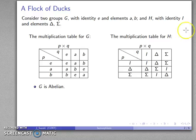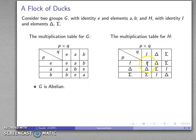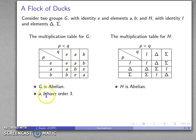Group G is abelian — the products are symmetric because the multiplication table is symmetric along the diagonal. Group H is also abelian. Both A and B have order three: A squared is B, and A cubed works out to be E, so both A and B have order three in group G.